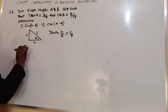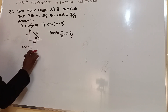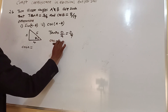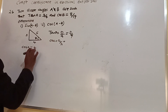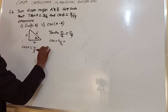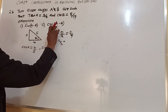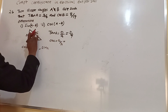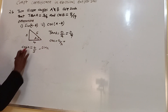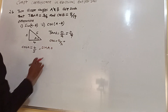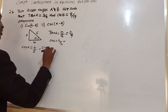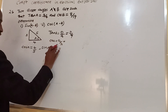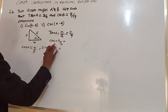From this triangle, cos A is adjacent over hypotenuse, which is 4 over 5. And sin A is opposite over hypotenuse, which is 3 over 5.